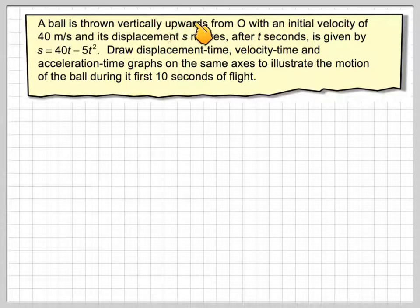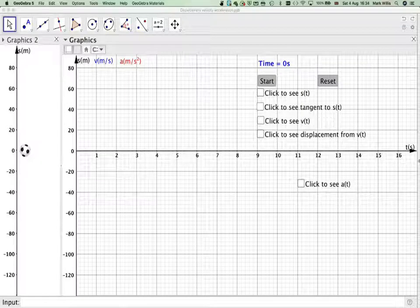A ball is thrown vertically upwards from an origin with an initial velocity of 40 metres per second and its displacement s metres after t seconds is given by s equals 40t minus 5t squared. Draw displacement-time, velocity-time and acceleration-time graphs on the same axis to illustrate the motion of the ball during its first 10 seconds of flight. So what we're going to do is use GeoGebra. The GeoGebra app is in the notes of the video.